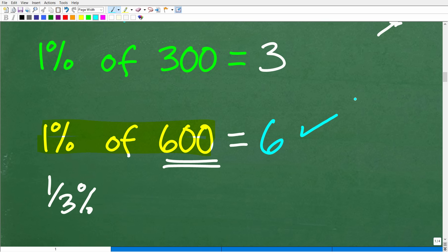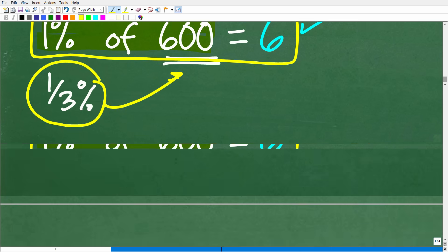And if you said 6, you would be absolutely correct. Okay, so now we're going to go ahead and take the next step and figure out what 1 third percent of 600 is. Now that we know that 1% of 600 is 6.